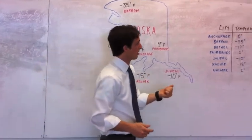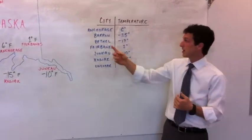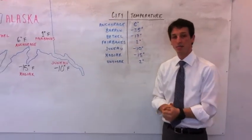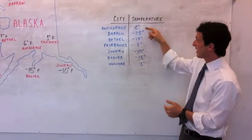Now over here on this T chart, what I've done is I've listed the cities in ABC order and their degrees.